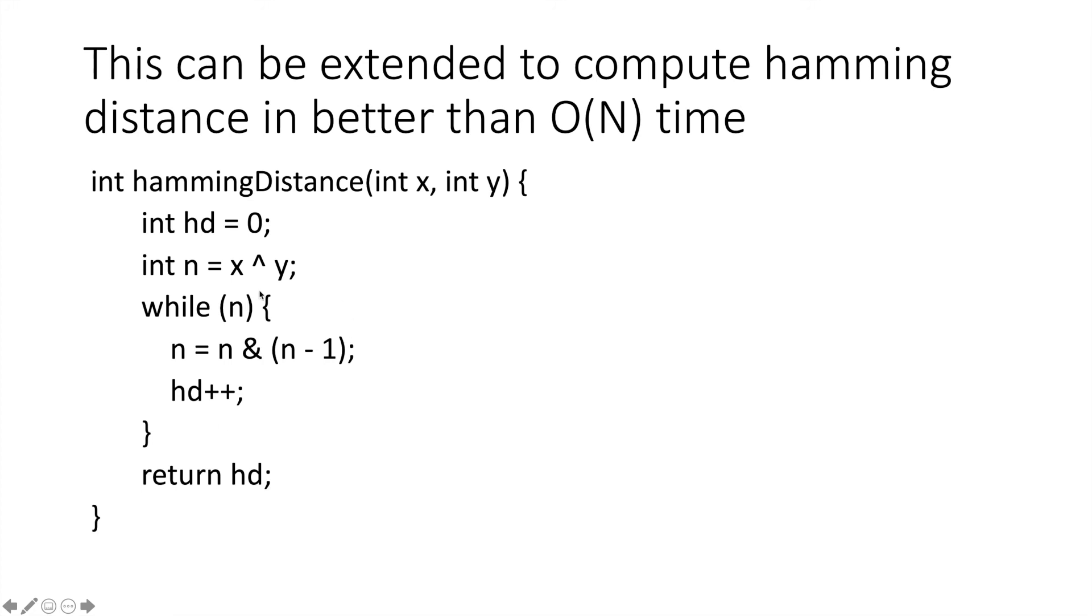we can replace that loop with the loop we saw in the last slide, where we say while n, set n to be n with the lowest set bit unset, and then increment the Hamming distance.